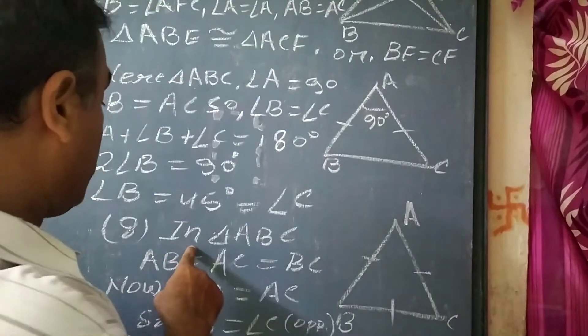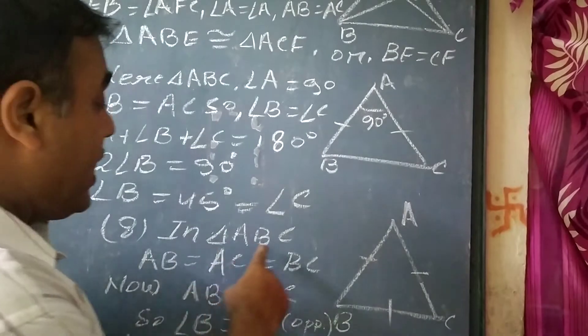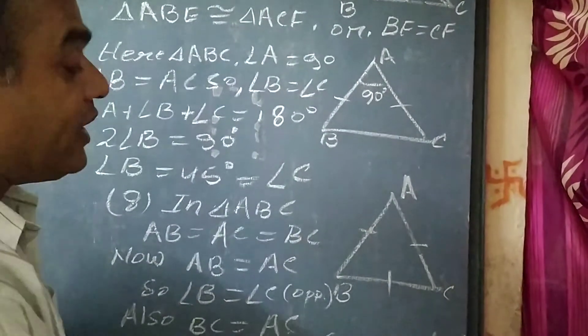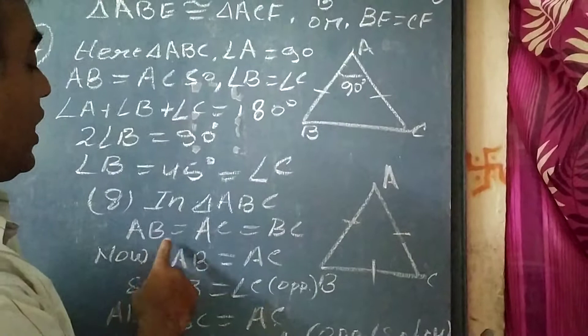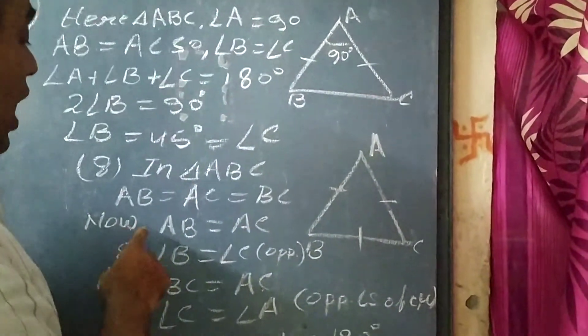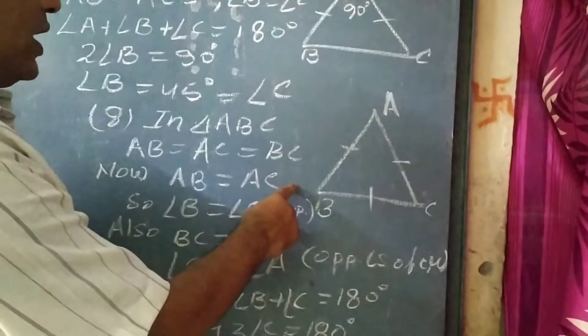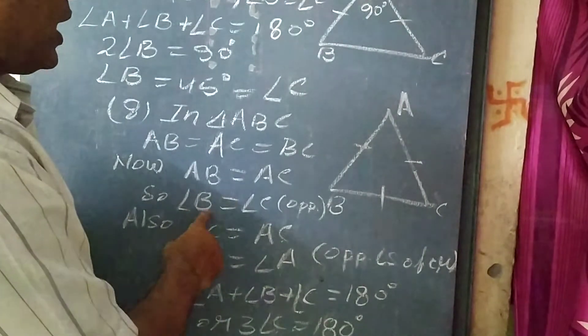Now question number 8. In question number 8, as you can see triangle ABC. Here ABC is equilateral triangle. Equilateral triangle, that is all sides are equal, so AB equal to AC equal to BC. Now AB equal to AC, so we can write angle B equal to angle C.